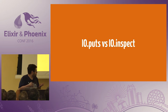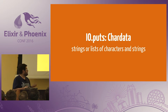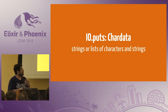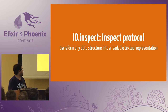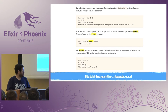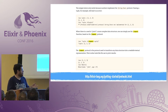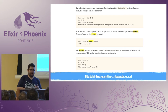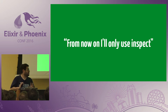I searched this on Google and Stack Overflow answered me: just use inspect. I tried it, it works, and I felt happy again. But what is the difference between puts and inspect? Puts uses just chardata — so strings, or lists of charlists and strings. And inspect uses the Inspect protocol, which transforms any data structure into a readable textual representation. Later I found this in the Elixir guide — you can see more in the protocols section — and you can use inspect in other parts of your code.